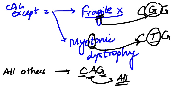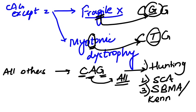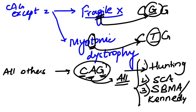All the remaining trinucleotide repeat disorders are CAG repeats. Examples include Huntington's disease, and CNS disorders such as spinocerebellar ataxia, spinal and bulbar muscular atrophy (also called Kennedy disease), and dentatorubral dystrophy. These CNS disorders mainly affecting the central nervous system all come under CAG repeat disorders.